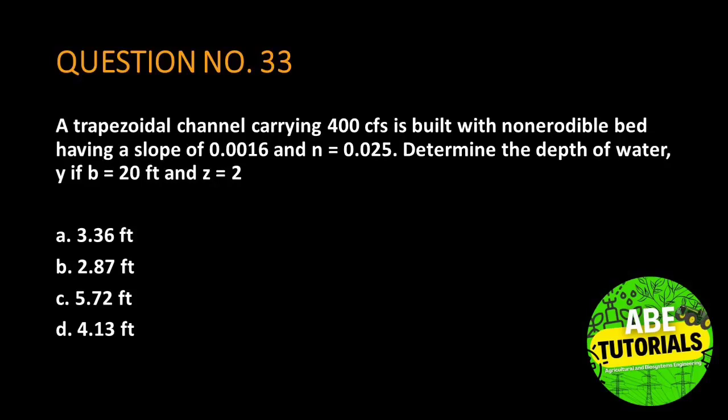Question number 33. A trapezoidal channel carrying 400 cubic feet per second is built with a non-erodible bed having a slope of 0.0016 and manning coefficient of 0.025. Determine the depth of water, y, if b is 20 feet and z is 2.